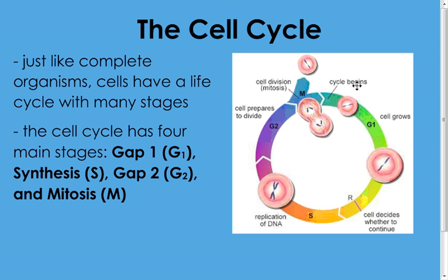If you look at this diagram on the right, you can see that cells start very small, they grow, and they decide whether to continue on. If they do, they go through a cell division process — the cell prepares to divide and then actually divides into two new cells, which start the cycle all over again. The stages are Gap 1 (G1), Synthesis (S), Gap 2 (G2), and Mitosis (M). Sometimes the mitosis stage will have two separate parts, which we'll learn more about later.